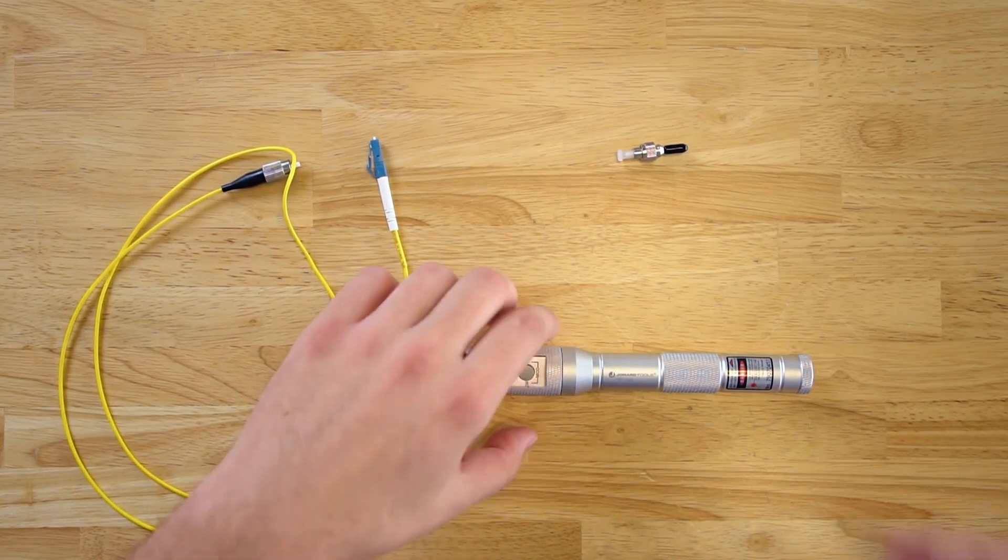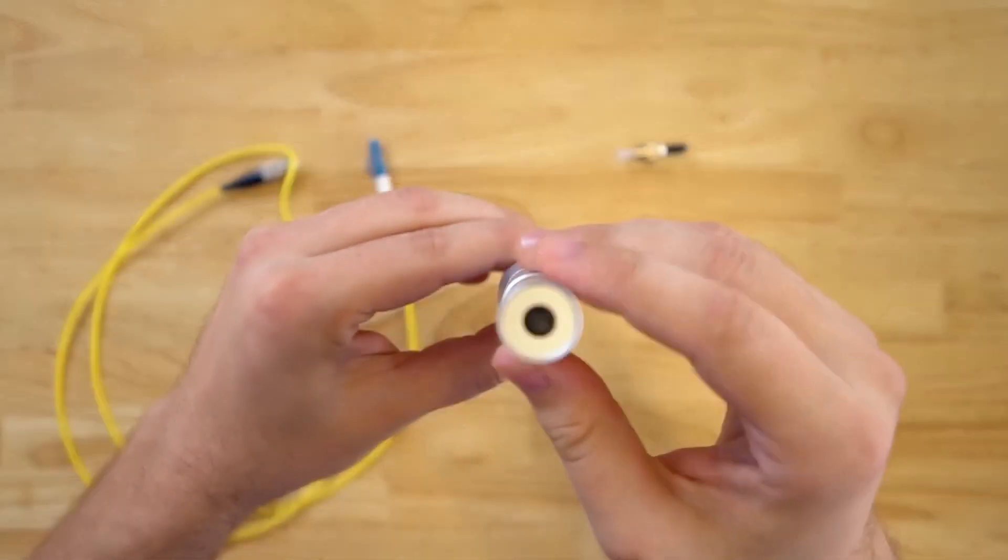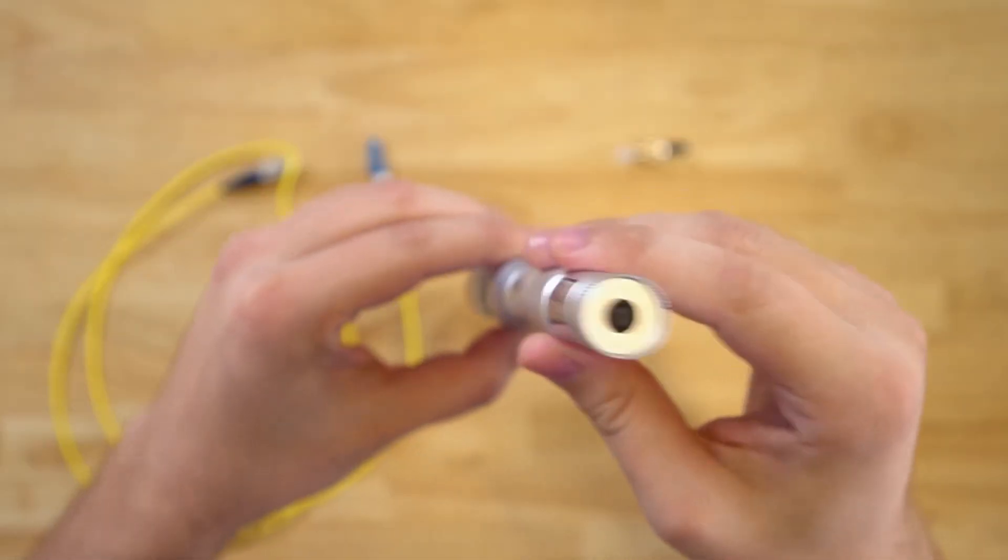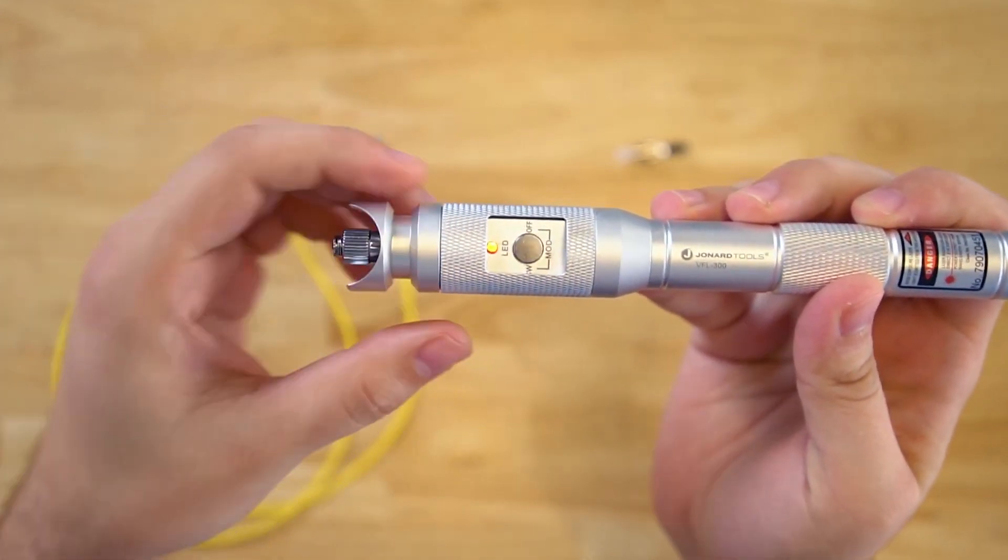To use the VFL300, first press the on-off switch on the bottom of the unit to turn it on. Next, press the mode button to turn the laser source on.